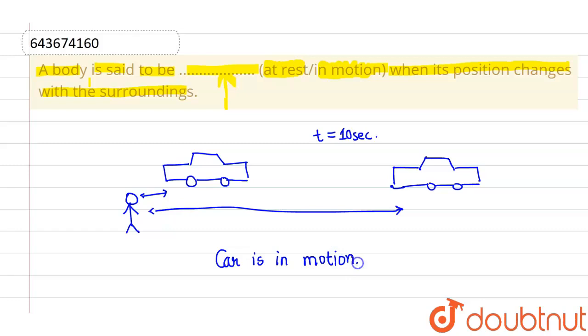So the car is in motion. This particular space will be filled by 'in motion.' The correct statement will be: A body is said to be in motion when its position changes with the surrounding. I hope you understood, thank you.